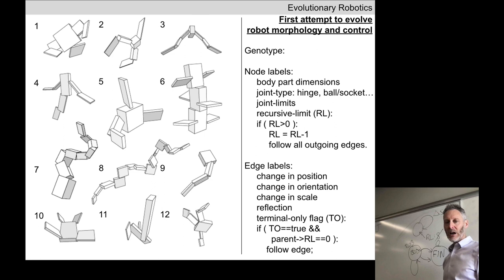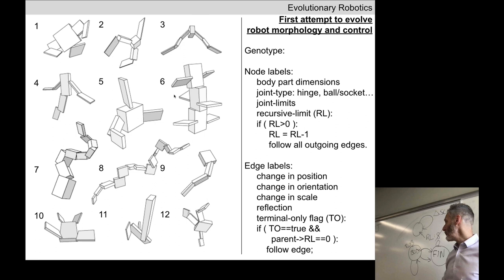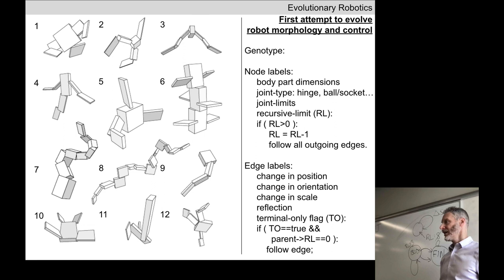You can imagine mutations hitting these different labels and edges. For the six-fin creature, if a mutation hits the recursive limit and changes it to some other integer, that affects the phenotype — if this number becomes five, we get a fish with five segments and ten fins. A decrease does the same thing in the other direction.